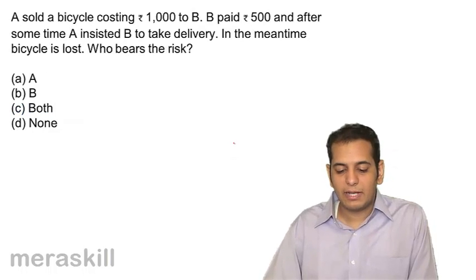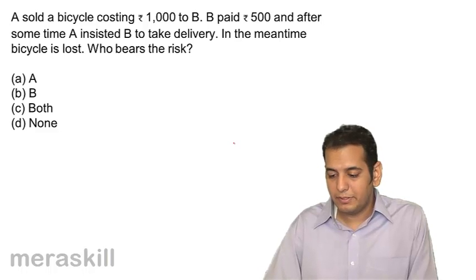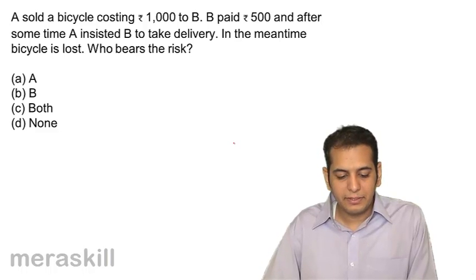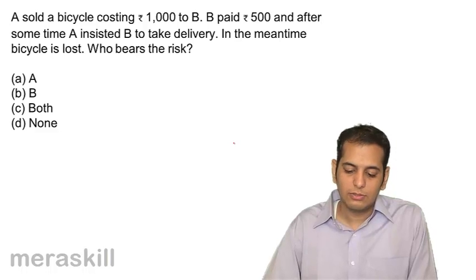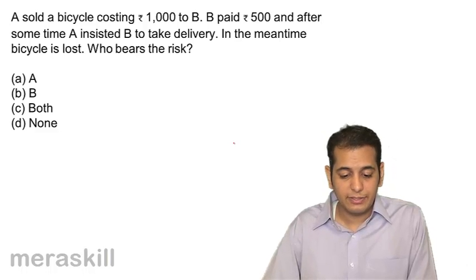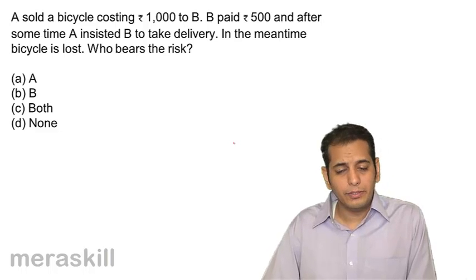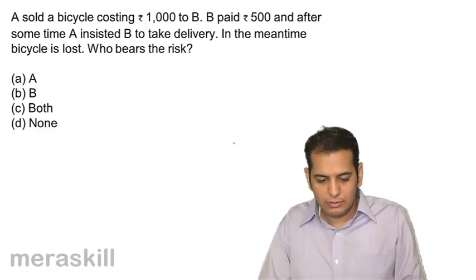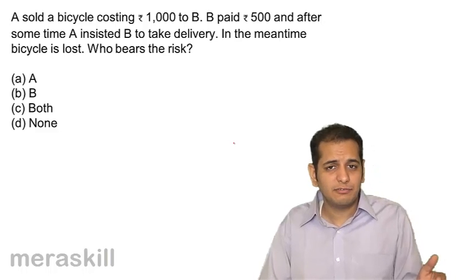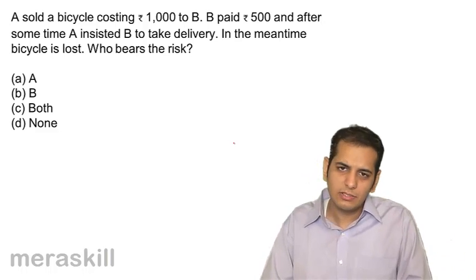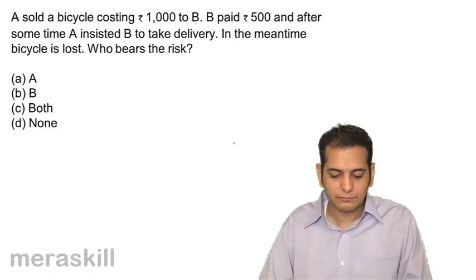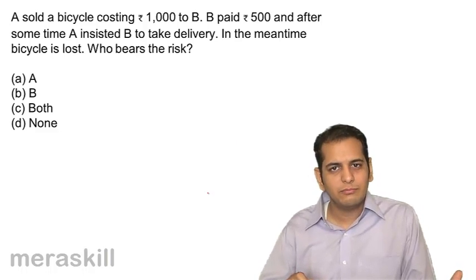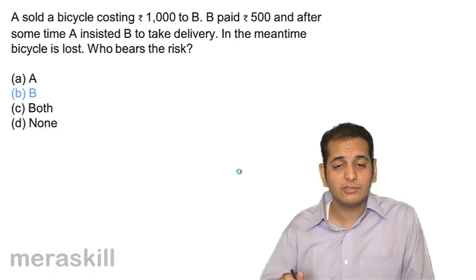Next: A sold a bicycle costing 1000 to B. B paid 500, and after some time A insisted B take delivery. In the meantime the bicycle is lost — who bears the risk? Since A has already sold the bicycle to B, ownership has transferred to B. B did not take delivery even after A's insistence, and the bicycle was lost in the meantime. The answer is B, because ownership is transferred to him and risk follows ownership.